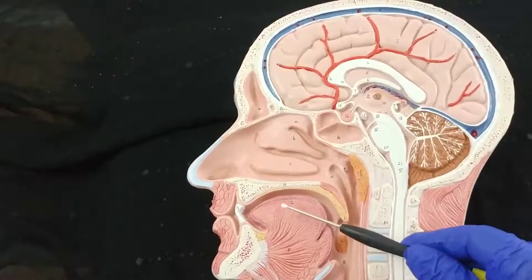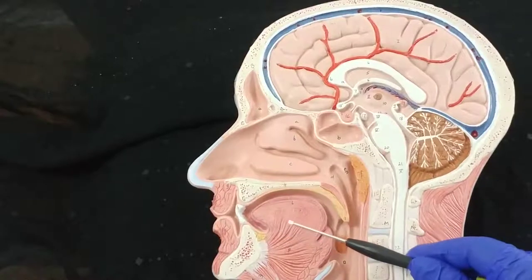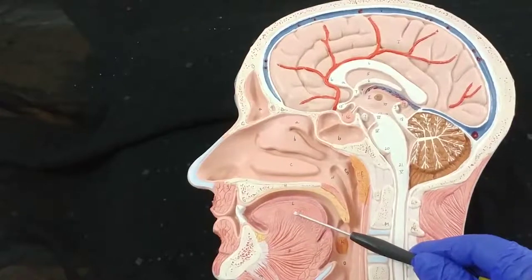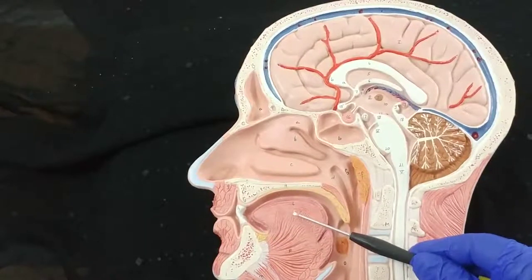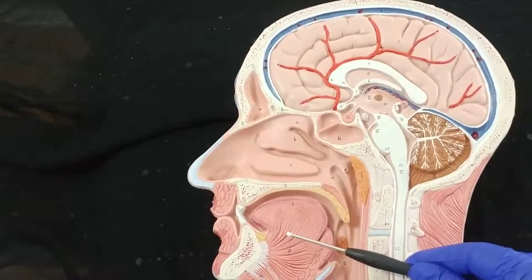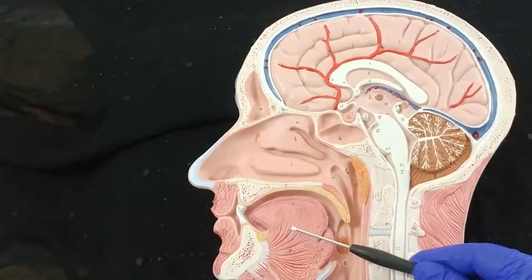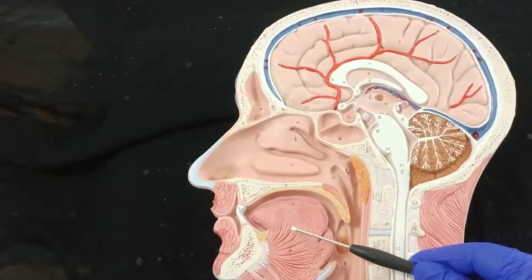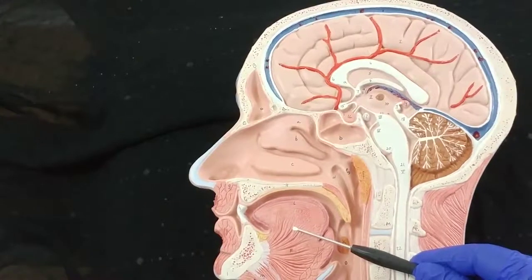All the muscles of the tongue, both extrinsic and intrinsic, are innervated by the hypoglossal nerve — that is the twelfth cranial nerve — except the palatoglossus, which is innervated by the vagus nerve through the pharyngeal plexus.